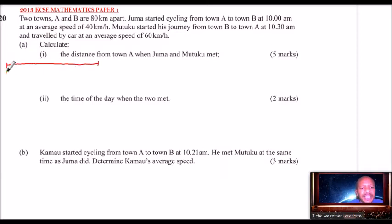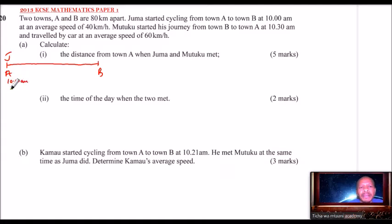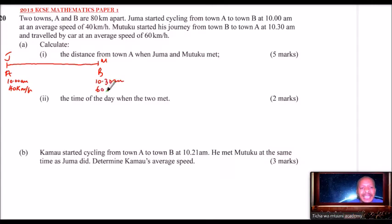We have town A and town B. From the information given, Juma started at A and began the journey at 10 a.m., moving at a speed of 40 kilometers per hour. Mutuku started at 10:30 a.m. and was moving at 60 kilometers per hour using a car. The distance from A to B is 80 kilometers.